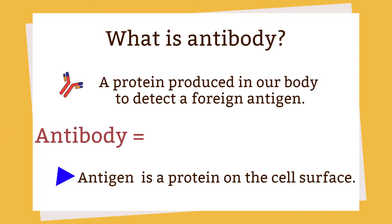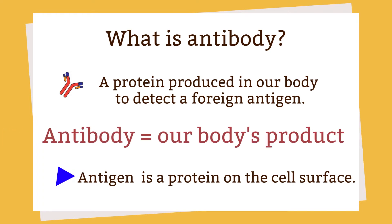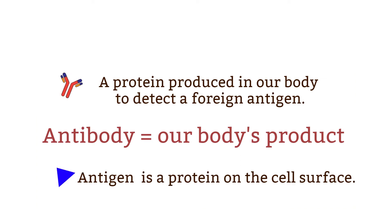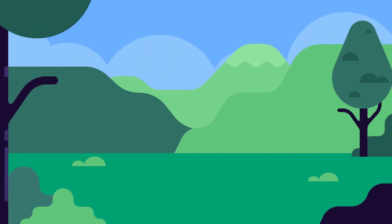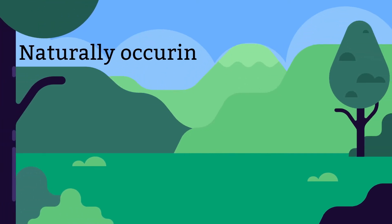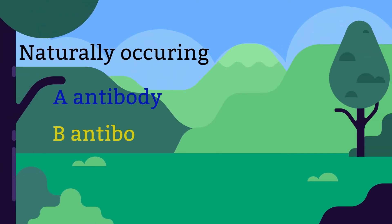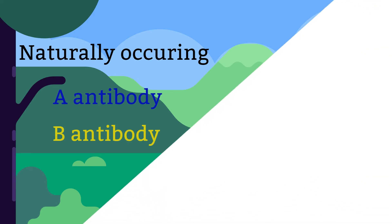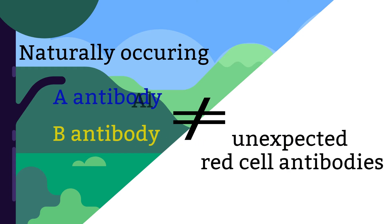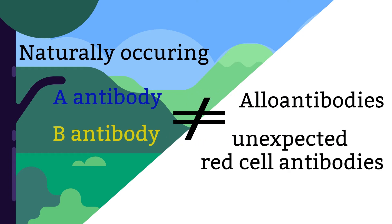This is how I remember it: antibody — bodies produce. We have a couple of naturally occurring antibodies, such as anti-A and anti-B antibodies. The non-naturally occurring antibodies are referred to as unexpected red blood cell antibodies, or alloantibodies. We also have something called autoantibodies, but that's not what we're going to be covering today.